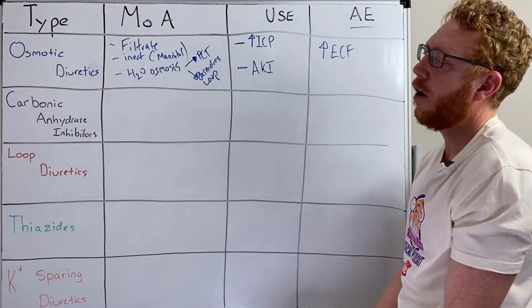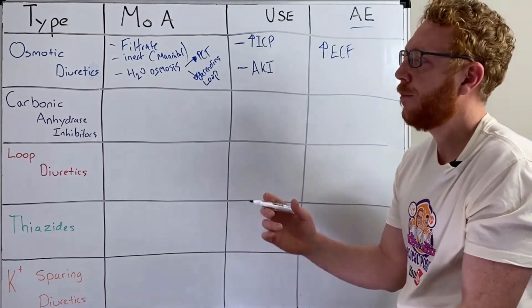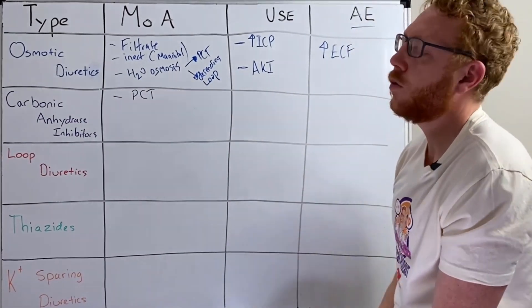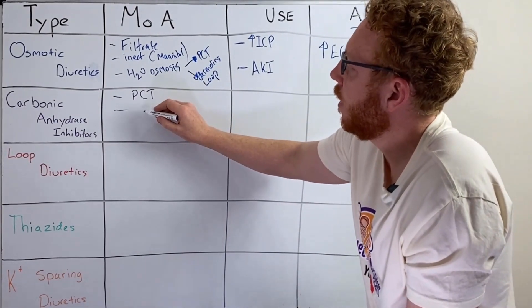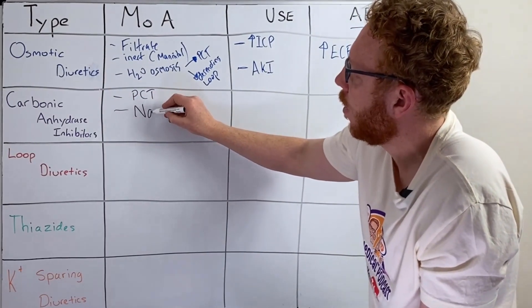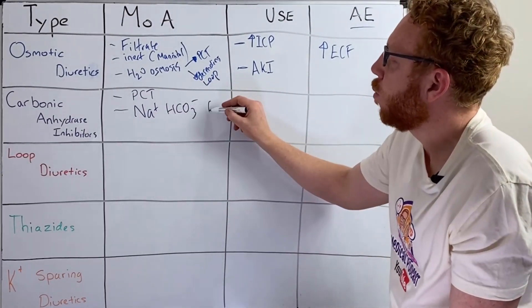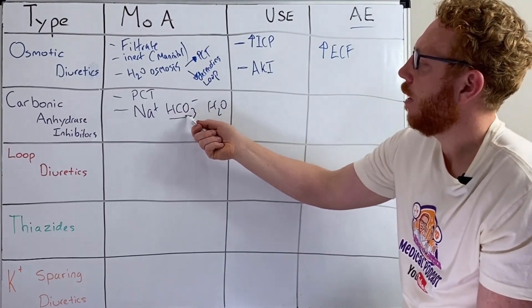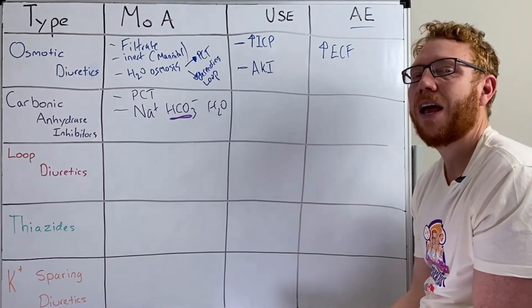The next one is the carbonic anhydrase inhibitors. An example is acetazolamide. This works at the PCT — the proximal convoluted tubule — by blocking the enzyme carbonic anhydrase. So what we're going to lose is both sodium and bicarbonate with water. Because you're losing bicarbonate, you're losing base, so you're actually putting the person into a more acidic situation.